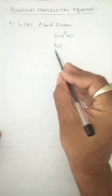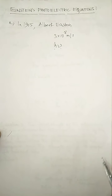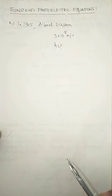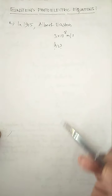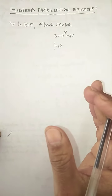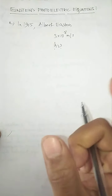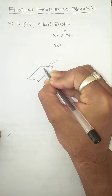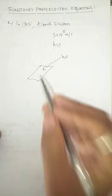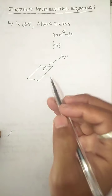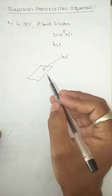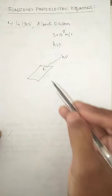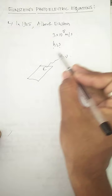Here h is a constant called Planck's universal constant. This concept was completely put forward by Albert Einstein. According to Einstein, to explain the photoelectric effect, he said that when a single photon of energy hν falls on a metal plate, it transfers the whole of its energy hν to any one of the electrons present in the metal plate.